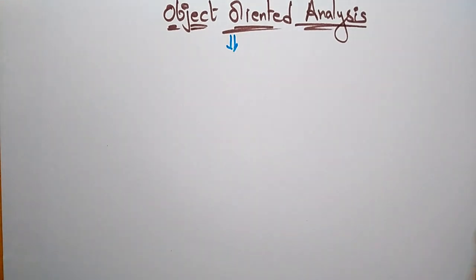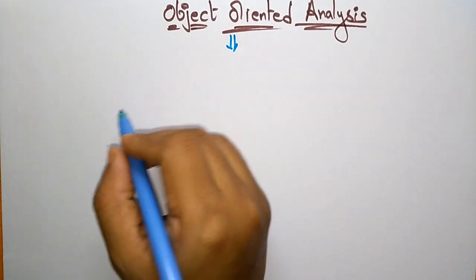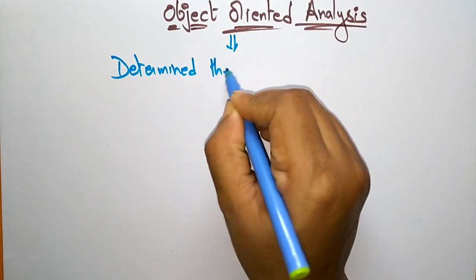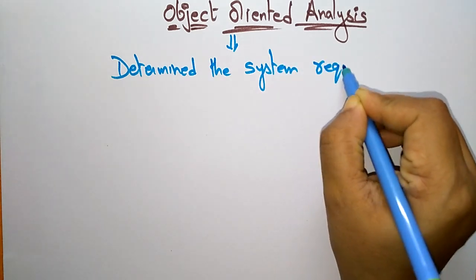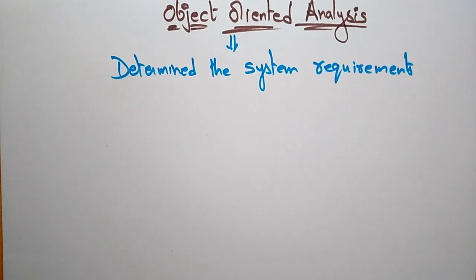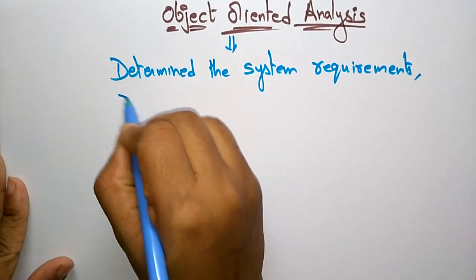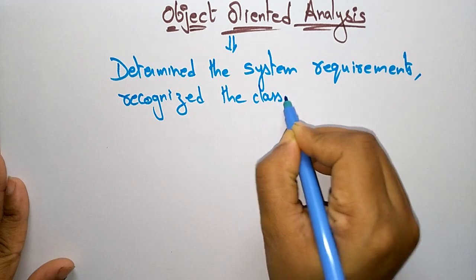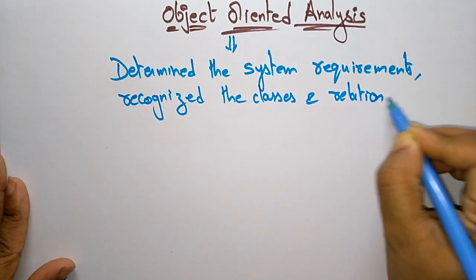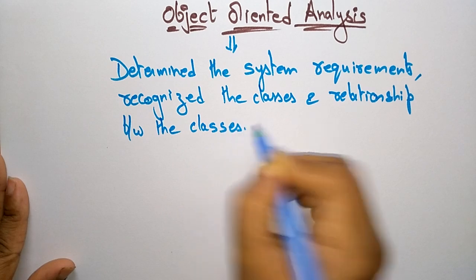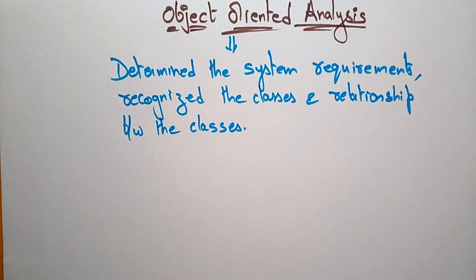Object Oriented Analysis determines the system requirements — whatever requirements the user wants, the overall outlook of the system. It also recognizes the classes and relationships between the classes. That is called Object Oriented Analysis: determining system requirements and recognizing classes and the relationships between those classes.